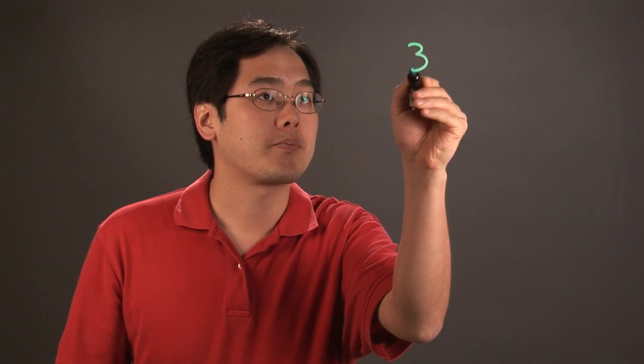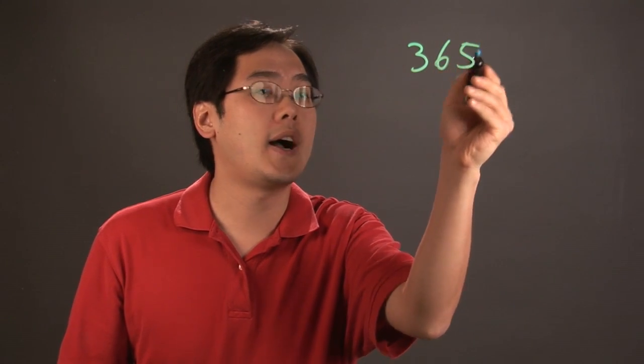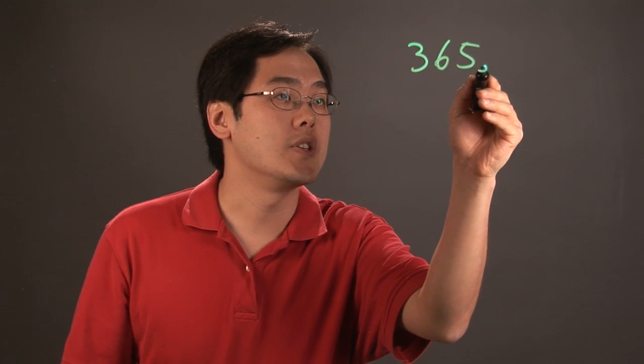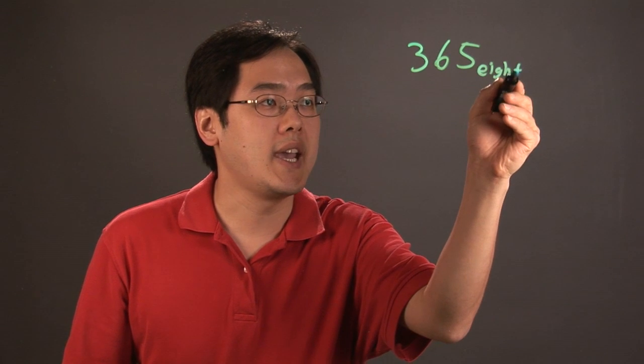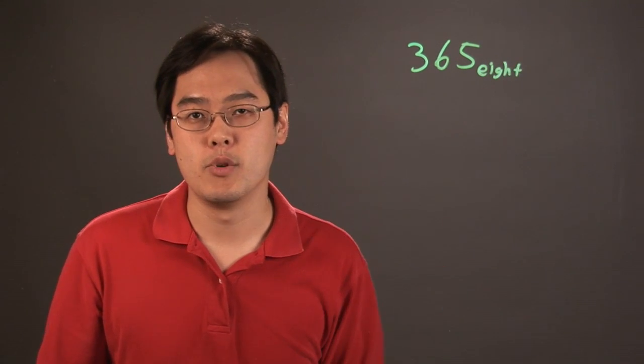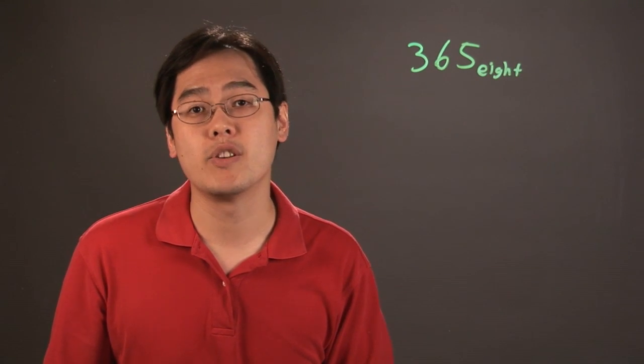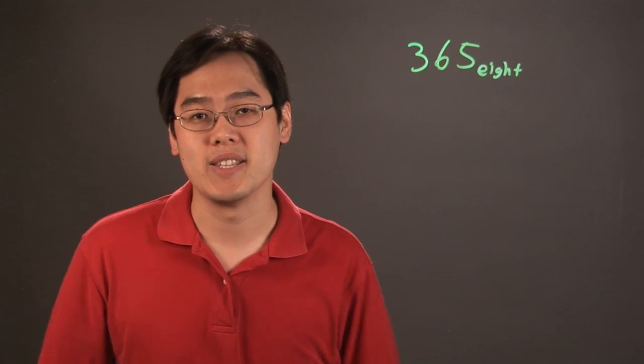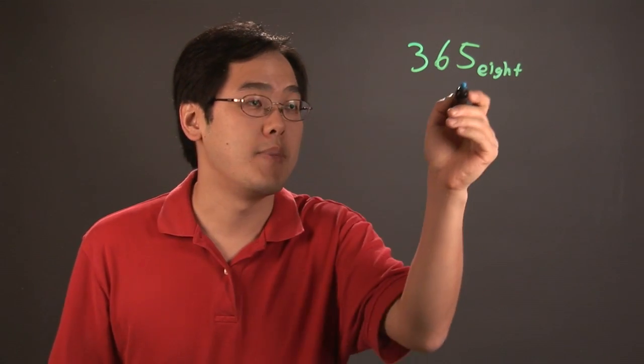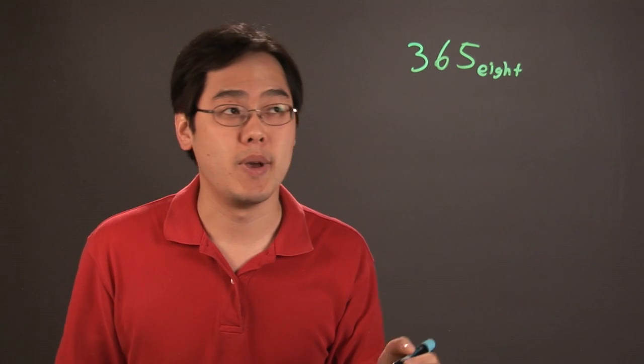So here's an example on how to do that. Suppose you want to convert 3-6-5, which is octal or base 8, to decimal form. Now notice I didn't say 365 because that would be in base 10, but 3-6-5 in base 8 is what we want to convert to base 10.